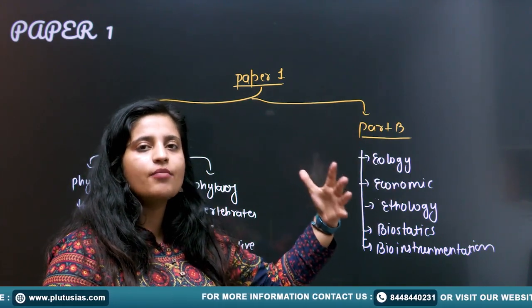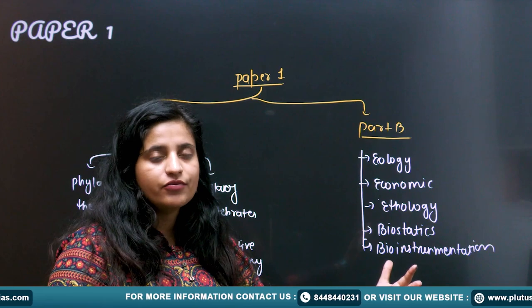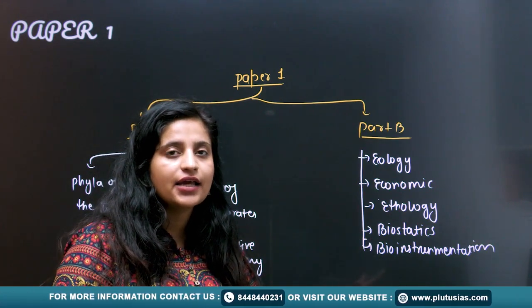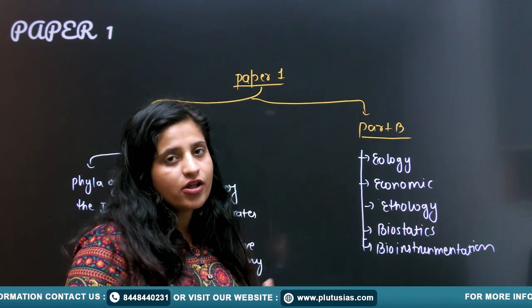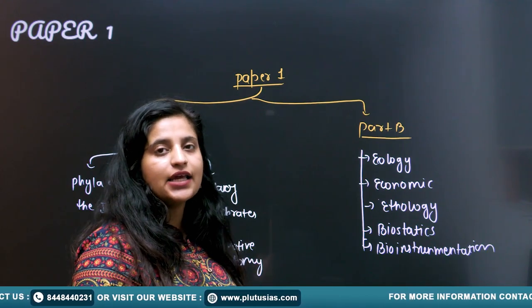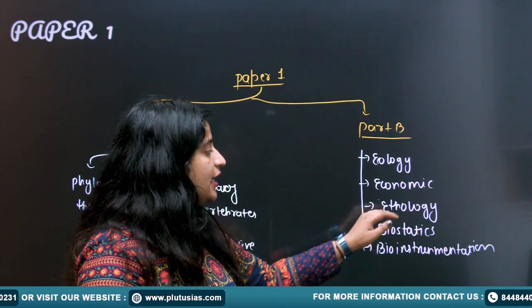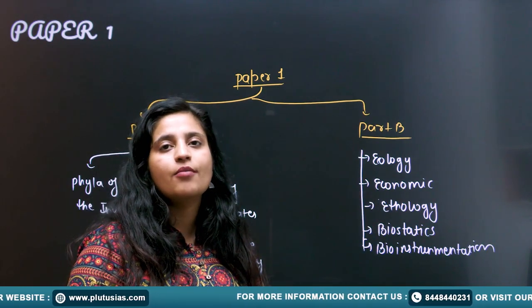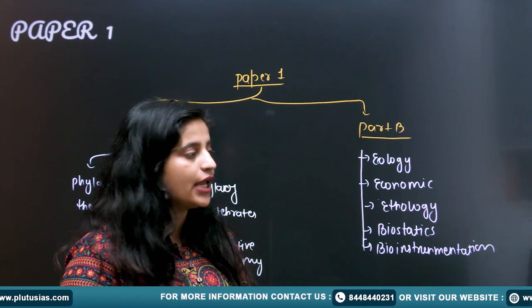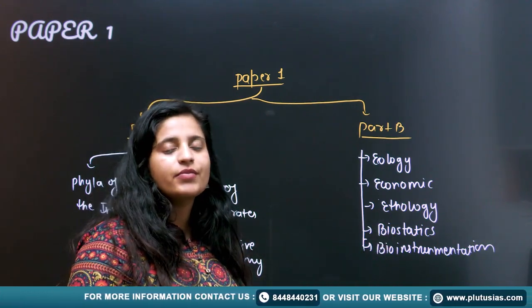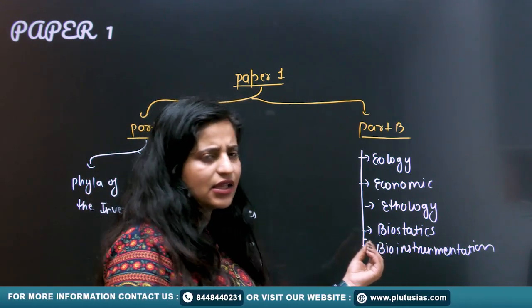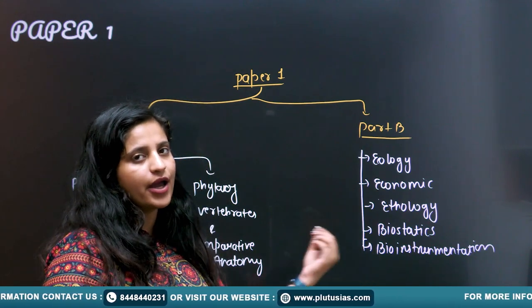In ecology, we are going to talk about the biomes of the world. We are going to talk about the cycles - nitrogen cycle, carbon cycle, phosphorus cycle. That is quite easy and also interesting. In ethology, we are going to talk about the animal behavior. In biostatistics and bio-instrumentation, yes, this is giving a little bit touch to your biotech part.